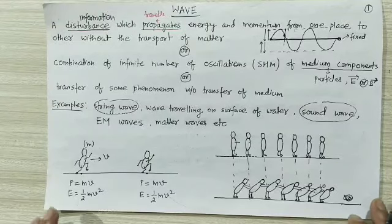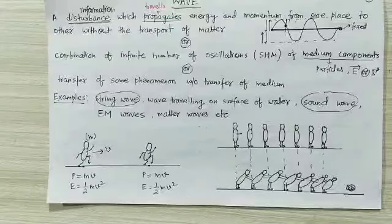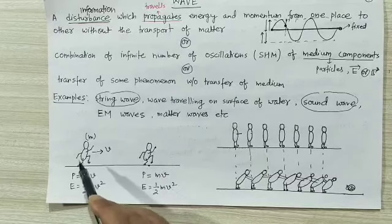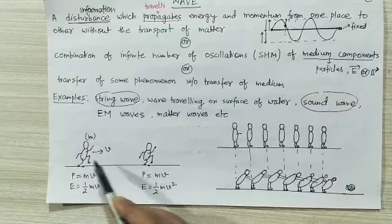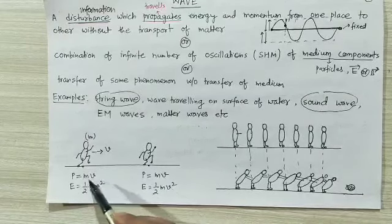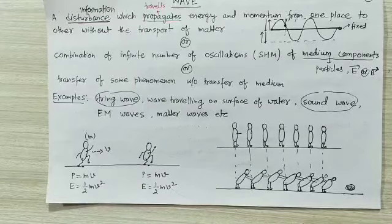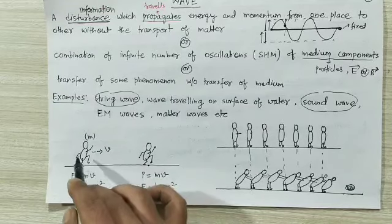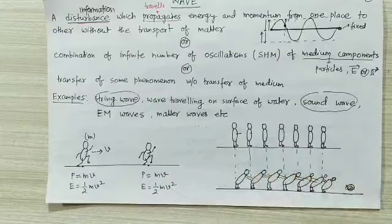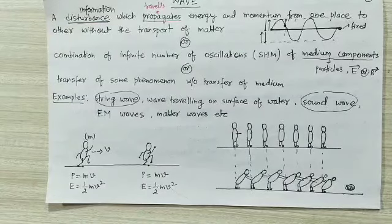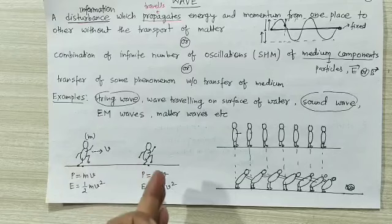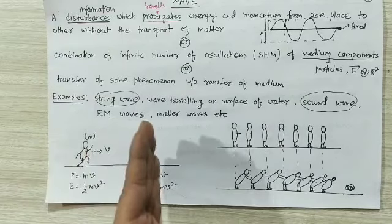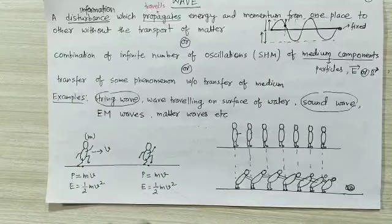Let's look at some examples to clarify the term wave. Suppose a man is traveling from one location to another with constant speed V. At the first location, momentum is mass times velocity and energy is half mv². At the new location, momentum and energy are the same. Can we consider this as a wave? The answer is no — because mass is traveling from one location to another. So this situation cannot be considered a wave.